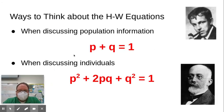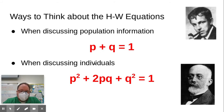As a general rule of thumb: when talking about the population, use p plus q, because it's the frequency of dominant and recessive alleles in the population. When talking about individuals — what percentage is homozygous dominant, homozygous recessive, or heterozygous — you use the second equation to calculate that.